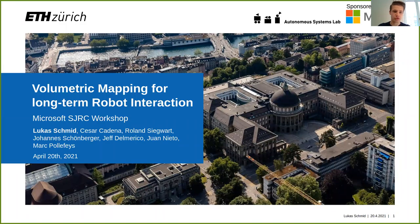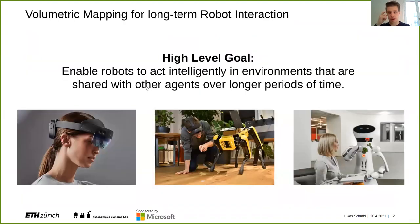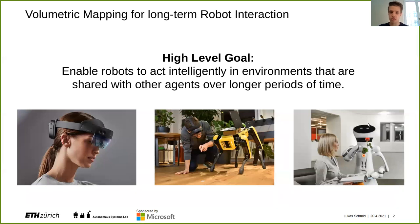Welcome to this presentation on a joint research project about volumetric mapping for long-term robot interaction. The high-level goal is to enable robots to act intelligently in environments that are shared with other agents over longer periods of time — in particular for service robotics applications, such as a robot at home where humans are also changing things. A changing environment is inevitable, and it's a crucial component for robots to understand and capture these changes, including for virtual interactions such as with augmented reality devices, particularly for human-robot interaction tasks.